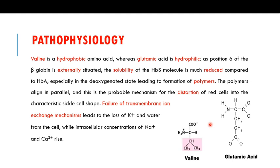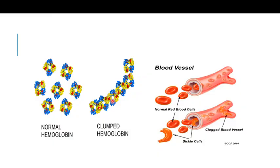The pathophysiology involves glutamic acid being replaced by valine at position number six, which decreases the solubility of the hemoglobin, leading to the formation of polymers. These polymers are responsible for the distortion of the red blood cell into the characteristic sickle shape. Normal hemoglobin does not clump together, but with the mutation, the hemoglobin clumps, which is also responsible for clogging of the blood vessels.